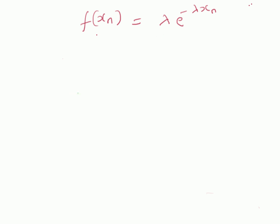Given n observations x, that is x equals x_n where n goes from 0 to n minus 1, the goal is to estimate the parameter lambda of the exponential distribution.